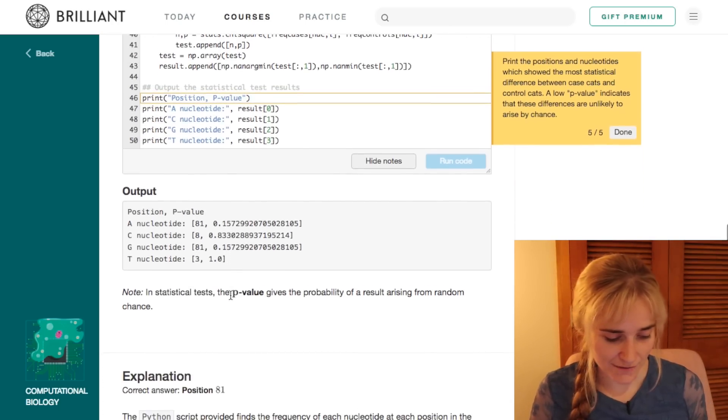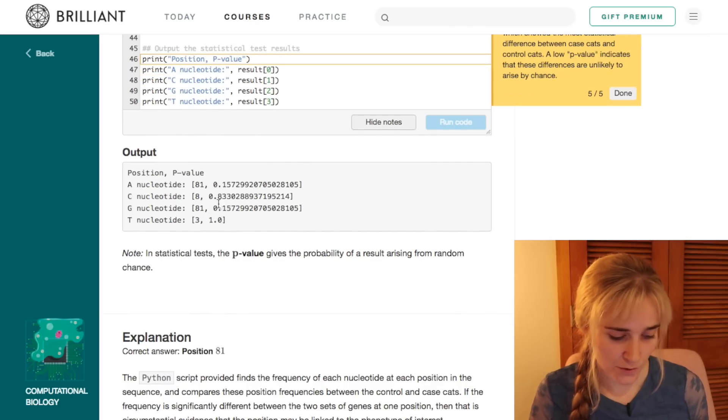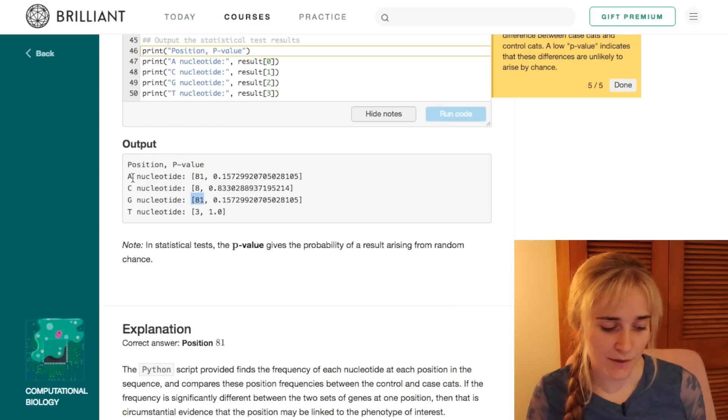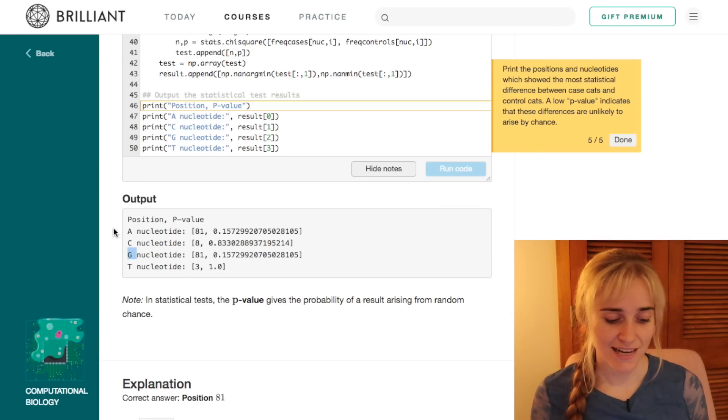So our lowest p-value here is for the first and third option, which means that at position 81 there definitely seems to be something going on, and it looks like we've had a change from an A to a G nucleotide. So that's just an example of how we can start to sort through all this information that we have and start to get some useful results out of it that actually give us insight into what's really going on.